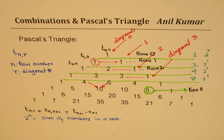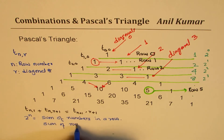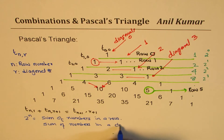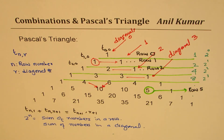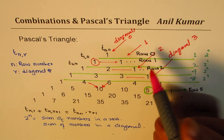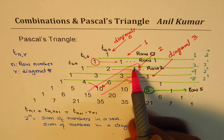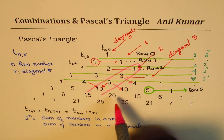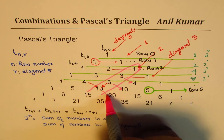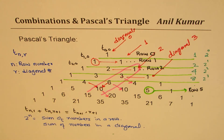How about the sum of numbers in a diagonal? Let's look into the second diagonal. One plus three is four — do you see that? Four plus six is ten. One plus three plus six plus ten should be twenty. So what we are getting is that if you add the terms in a diagonal, you get a term right there in the triangle.